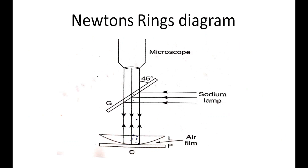For the Newton's Rings Experiment arrangement, first we need a light source — a Sodium Lamp, that is monochromatic light. Second is a Glass Plate G. Third is a Plano-Convex Lens L. P is a Plane Glass Plate. We also use a Travelling Microscope. These are the main parts of the Newton's Rings Experiment.